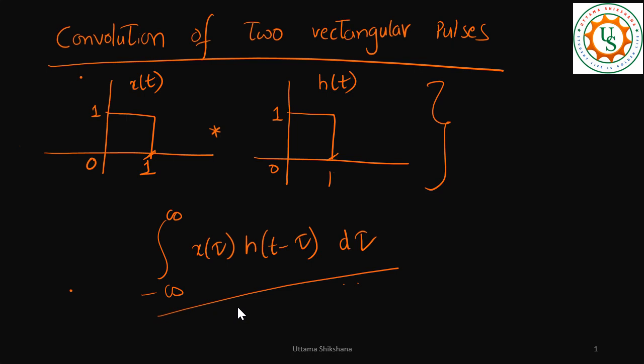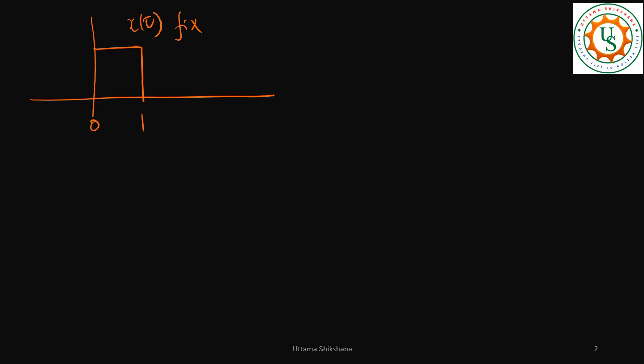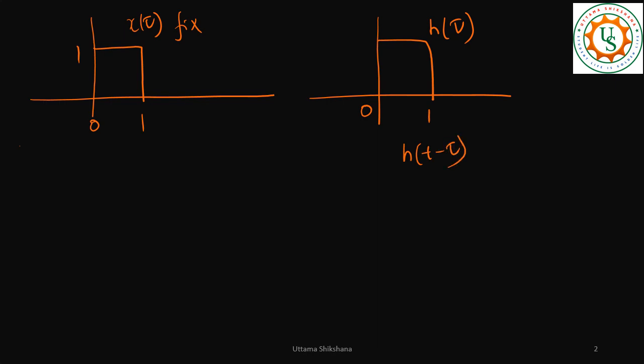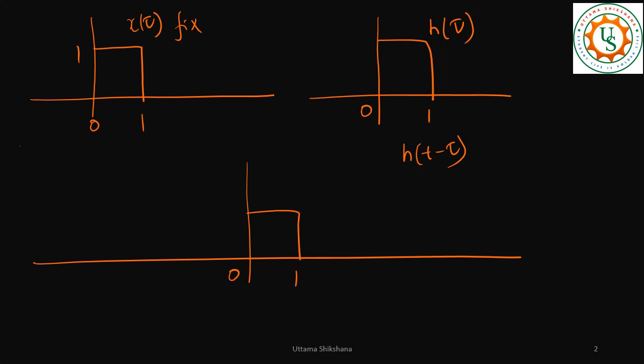We can try to solve this in a very simplistic way. As per the convolution equation, first we need to fix one of the quantities. Let's say x(t) is fixed, ranging from 0 to 1. We take h(τ) and we will vary it. What we need is h(t − τ) — let me write that here.